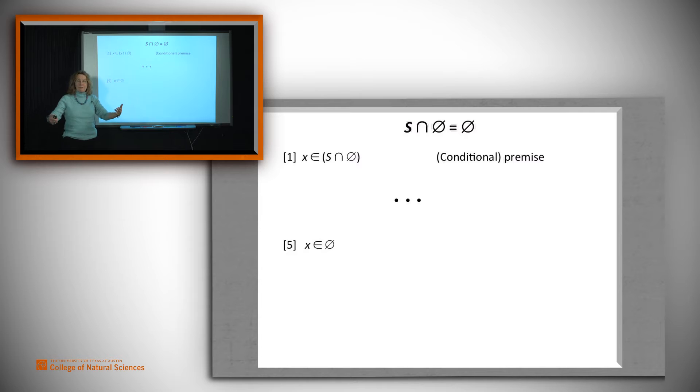Let's look at the scaffolding for the rest of the proof. Then we use conditional discharge to argue that one and five together enable us to conclude that x being in the first set guarantees that it's in the second set.